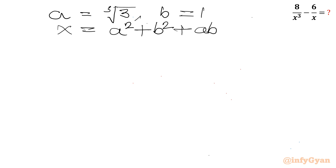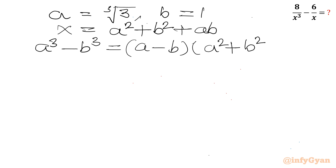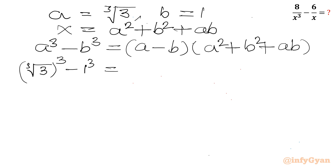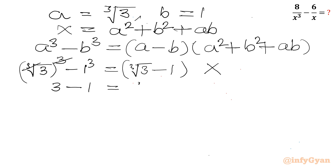Now I will write one algebraic identity: a cubed minus b cubed equals a minus b times a squared plus b squared plus ab. Let's apply the values. So cube root 3 whole cube minus 1 cube, equals cube root 3 minus 1, times the bracket which is x. Now I can cancel cube root with power 3, and 1 cube is 1. So left hand side is 3 minus 1, right hand side is cube root 3 minus 1 times x.